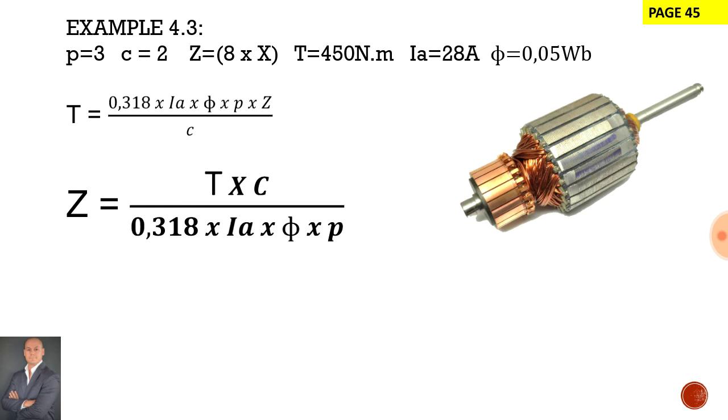Right, so Z equals the torque multiplied by the number of parallel paths divided by 0.318, the armature current, the flux per pole, and the number of pole pairs. So let's substitute our values.